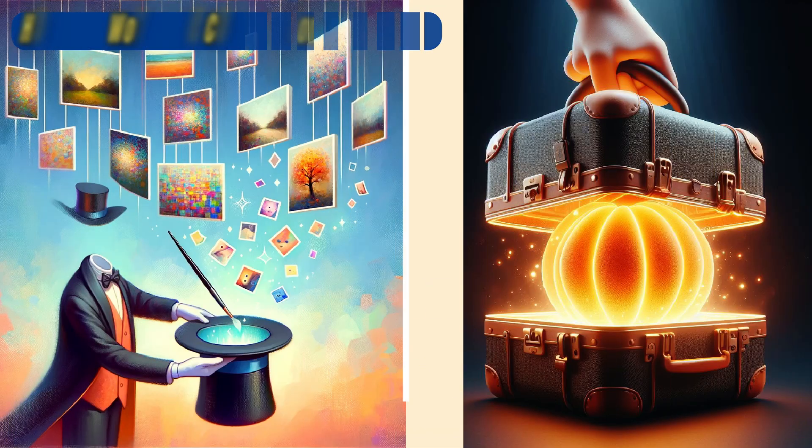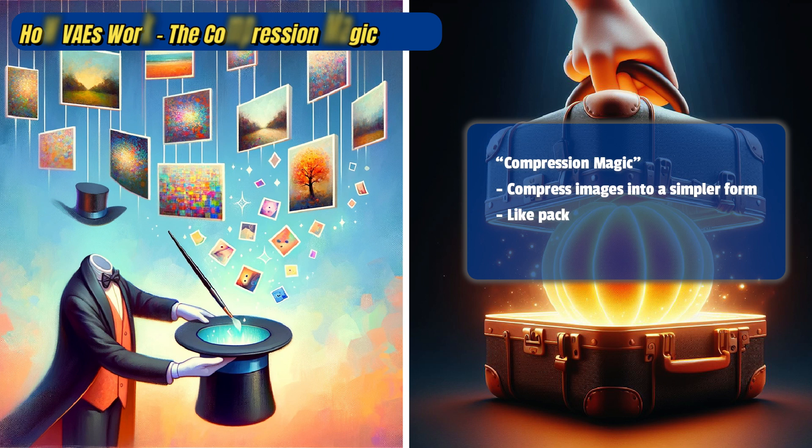Let's dive a bit deeper into our magician's hat. First, the VAE takes a world full of complex, high-resolution images and compresses them into a simpler, magical essence — a potion of sorts — containing the core characteristics of these images. This process is like taking a suitcase and packing it with everything you need for a vacation, but in a much, much smaller form.